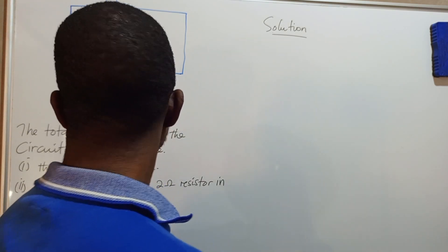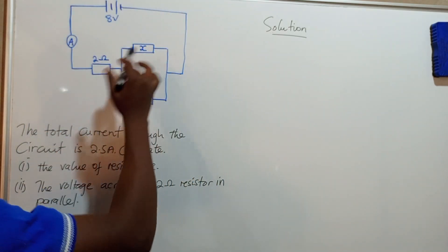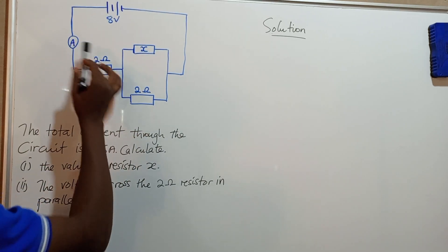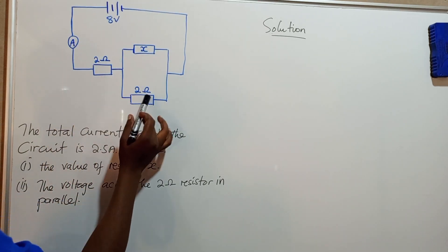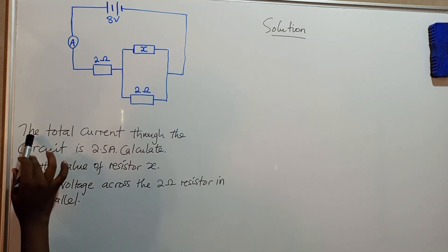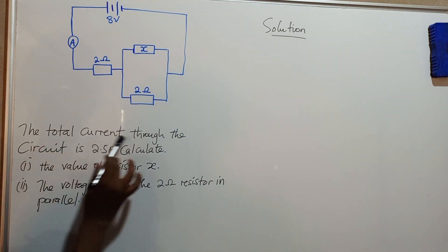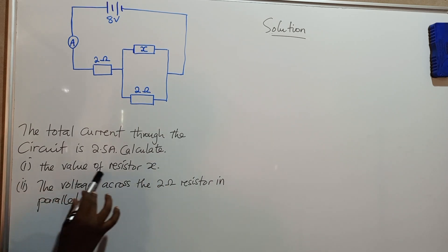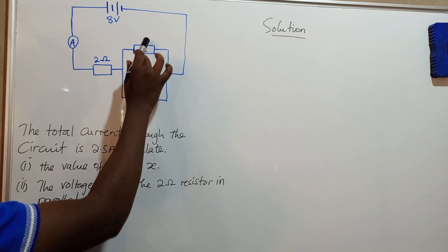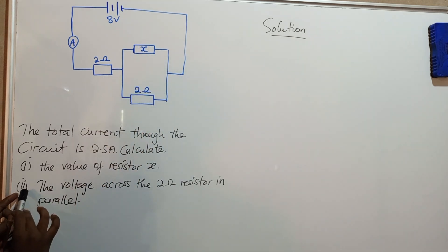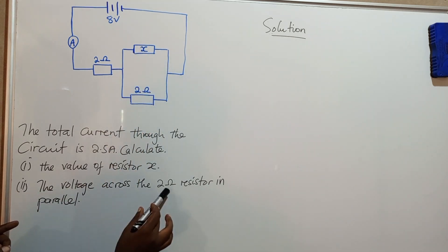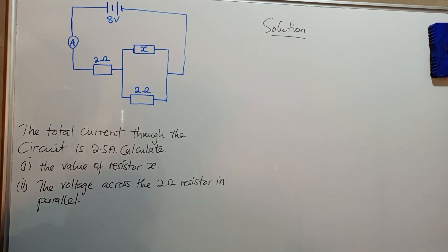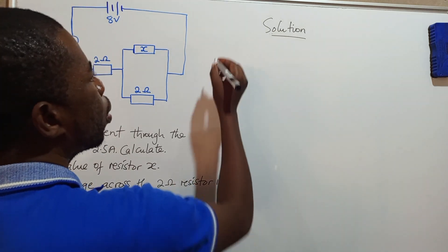The question shows a diagram with an 8-volt battery, an ammeter, a 2-ohm resistor, another 2-ohm resistor, and resistor X. The question reads: the total current through the circuit is 2.5 amps. Calculate part one: the value of resistor X, and part two: the voltage across the 2-ohm resistor in parallel.